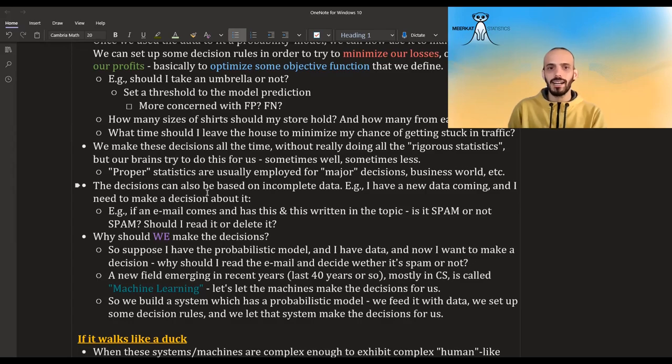These decisions can also be on new data that constantly comes. So for example, an email could come and I'm trying to think, okay, based on the topic, is it spam or not spam? And I have a model and it gives me the probability that it's spam and it gives me the probability that it's not spam. And now I have to make a decision. I set up a decision rule and I decide. But the big question is why should we make the decisions, right? I mean, we can just set up a decision rule and then have the machine, the model, the system take the decision for us.